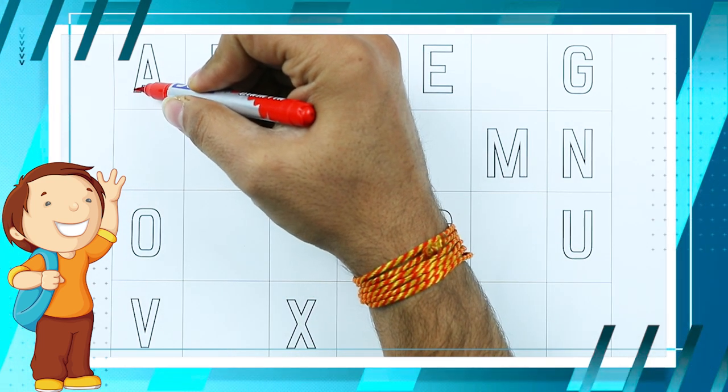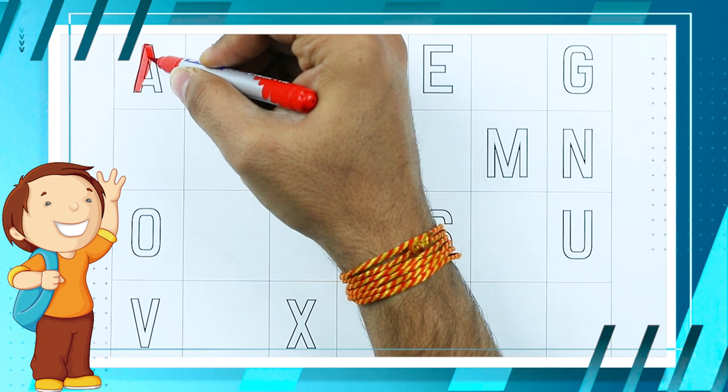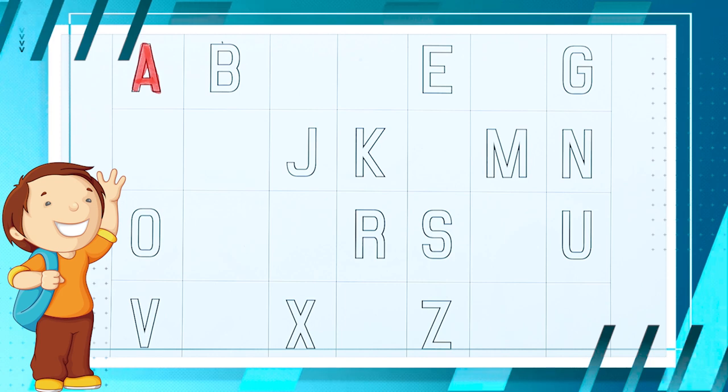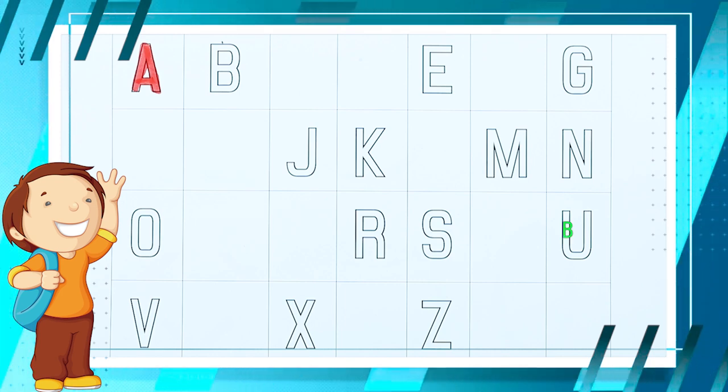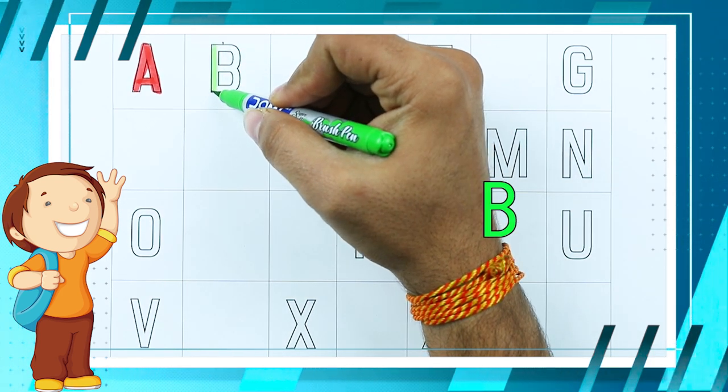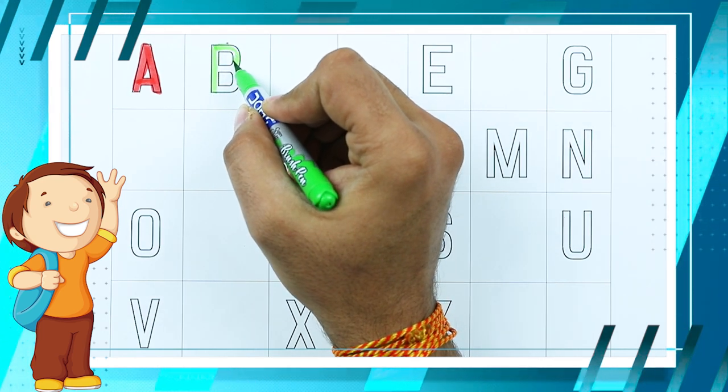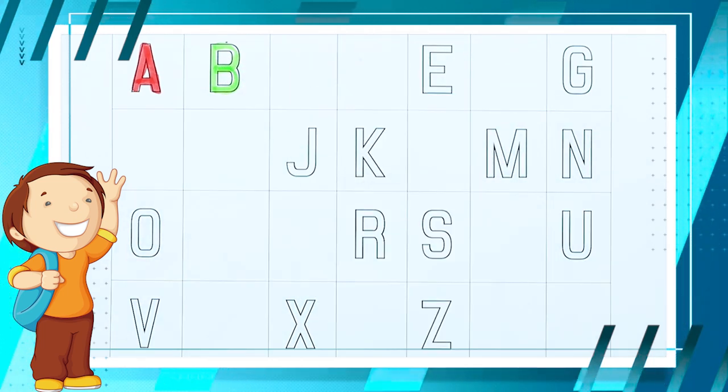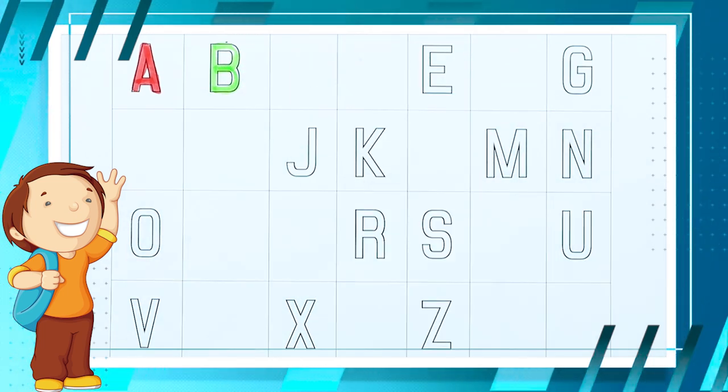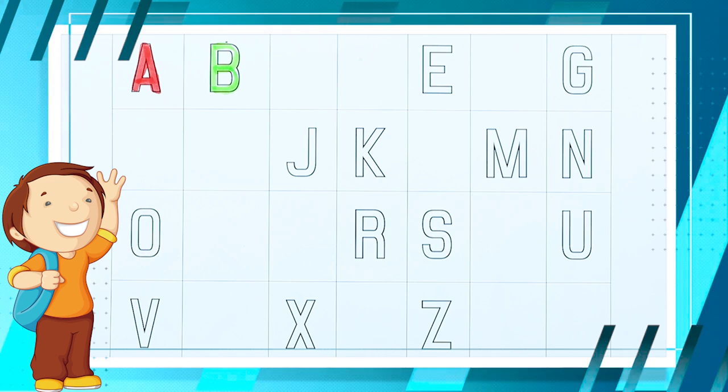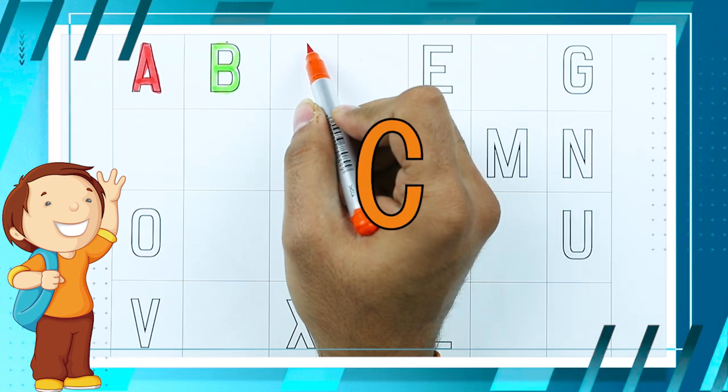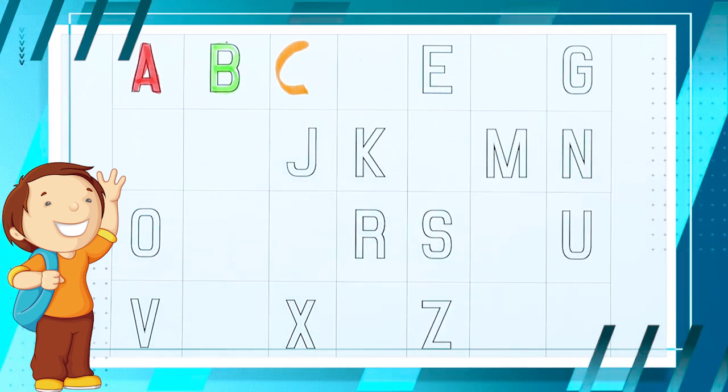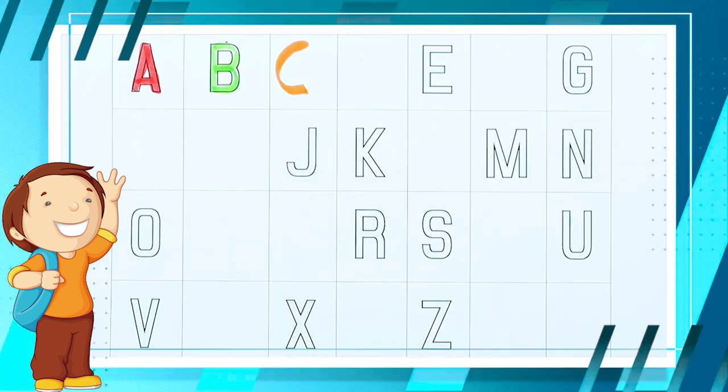A. A for apple with red color. A for apple. B. B for ball with green color. C. What's next? C. C with orange color. C for cat.